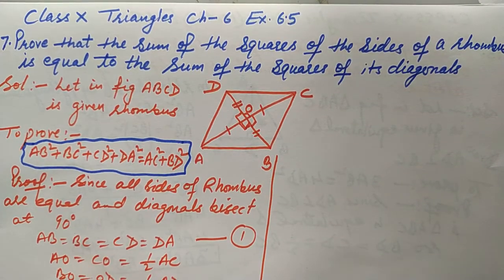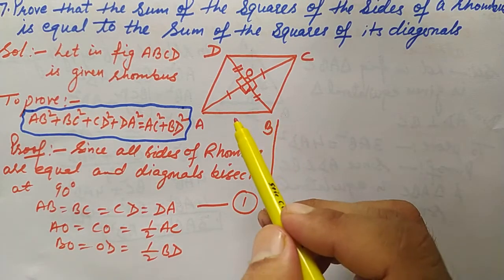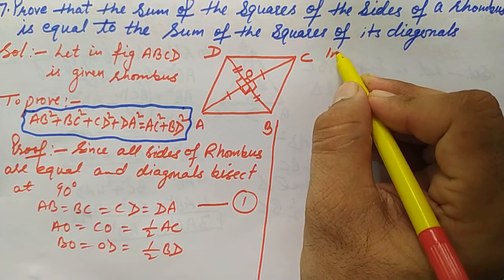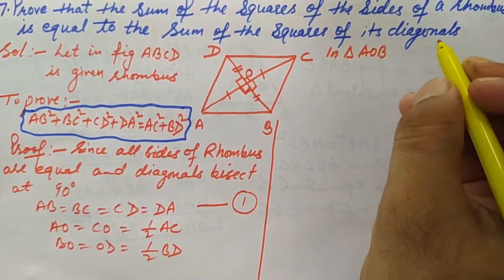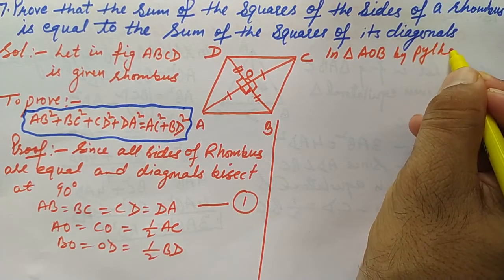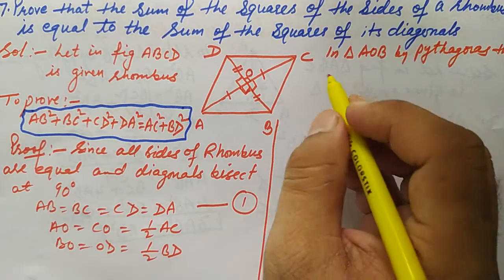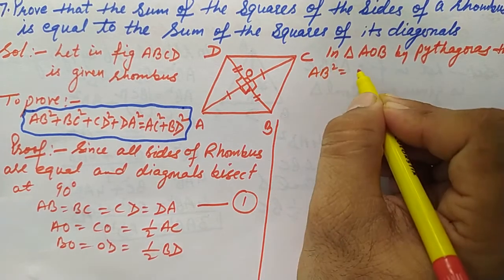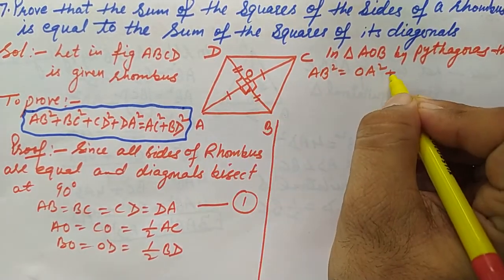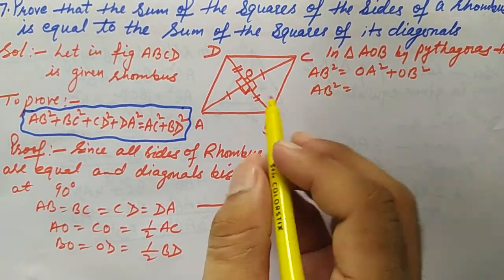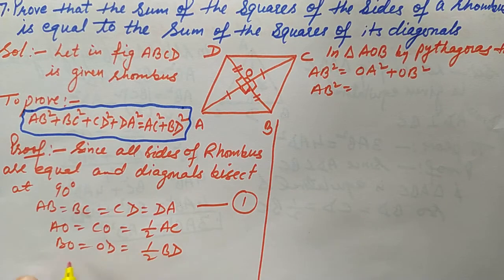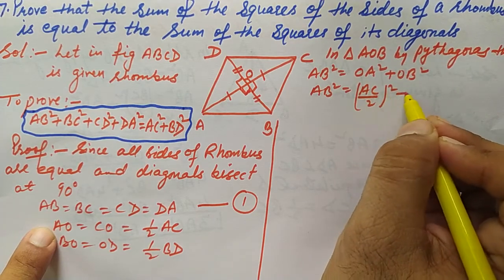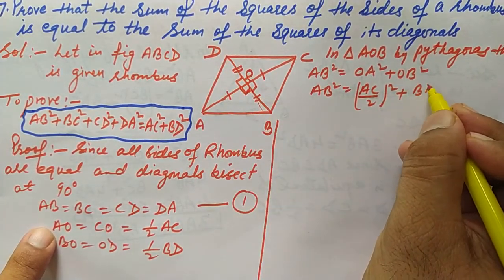Now we will apply the Pythagorean theorem in right-angled triangle AOB, since the angle at O is 90 degrees. By Pythagoras theorem in triangle AOB: AB² = OA² + OB². We can write OA as AC/2 and OB as BD/2, so AB² = (AC/2)² + (BD/2)².